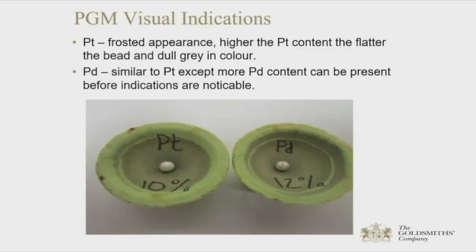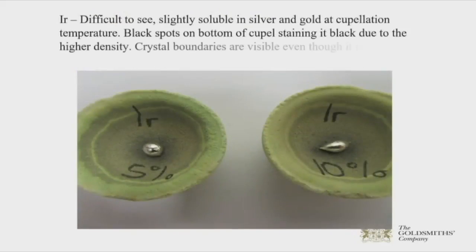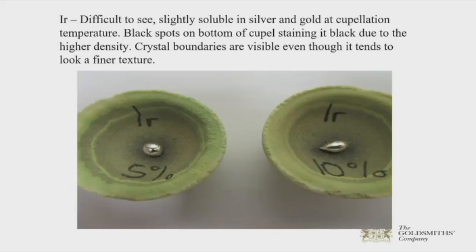Platinum and palladium at quite high amounts: the platinum beads on the left show a frosted appearance — the higher the platinum content, the flatter the bead and the duller and greyer it will be in colour. Palladium is very similar to platinum, except that more palladium content can be present before the indications are noticeable. Iridium is difficult to see, but it's slightly soluble in silver and gold at cupellation temperature, so you might see black spots on the bottom of the bead, and it stains the cupel black. Crystal boundaries are also visible, even though it looks like a finer texture.